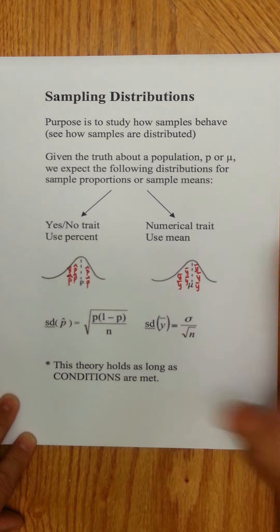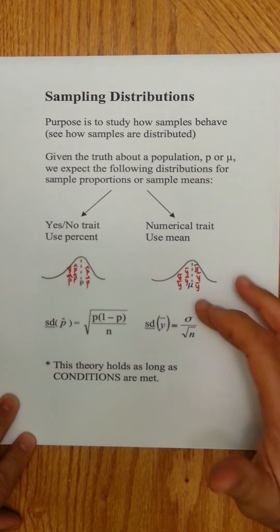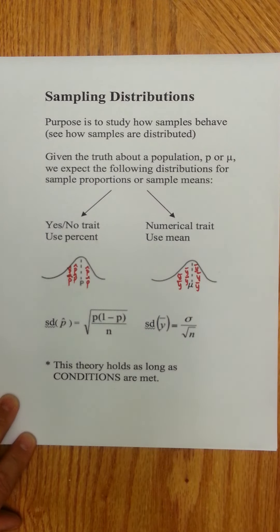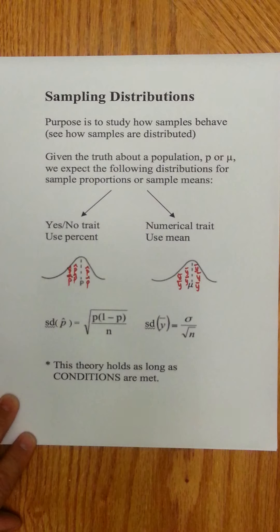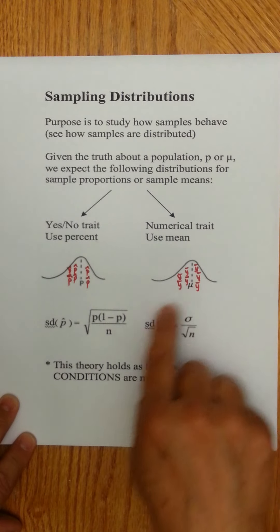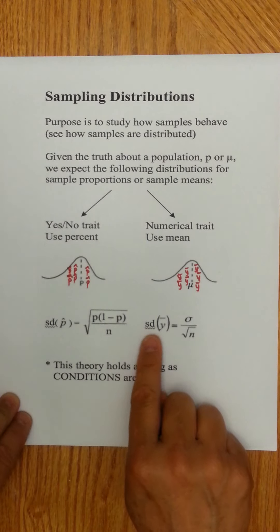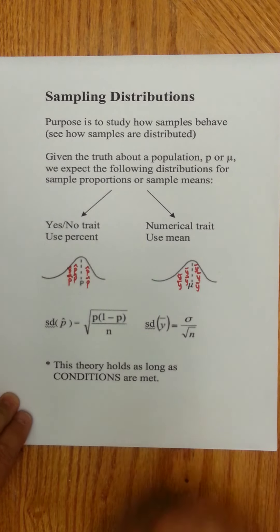For a numerical trait, we have sample means which could either be x-bar or y-bar. Our calculator uses x-bar, some other books use x-bar, our book uses y-bar. But it really doesn't matter whether it was an x or a y-value. Essentially you're averaging those x-values and it would be an x-bar, or you're averaging the y-values and it becomes a y-bar. So the sample means, the y-bars, will pile up around mu in a normal distribution and spread out by sigma over square root of n.